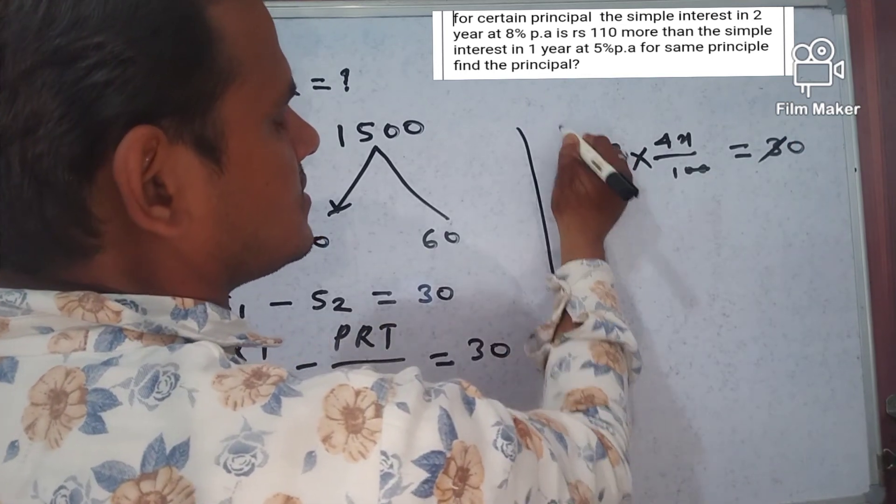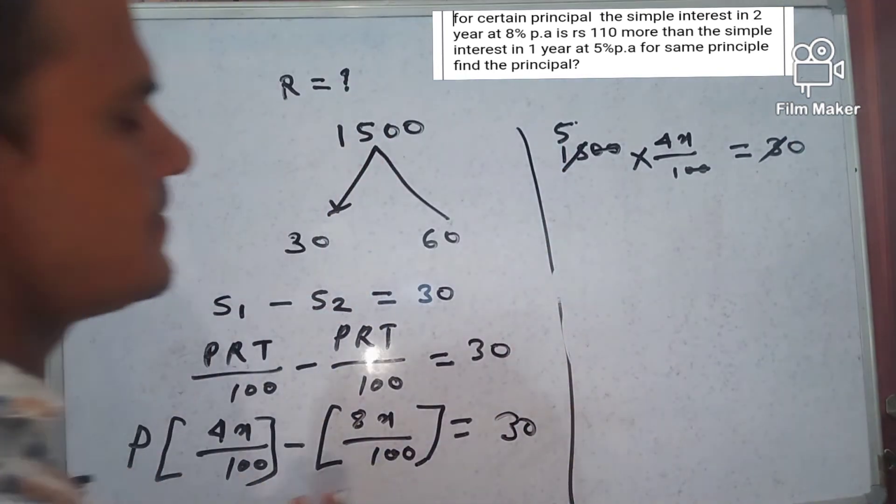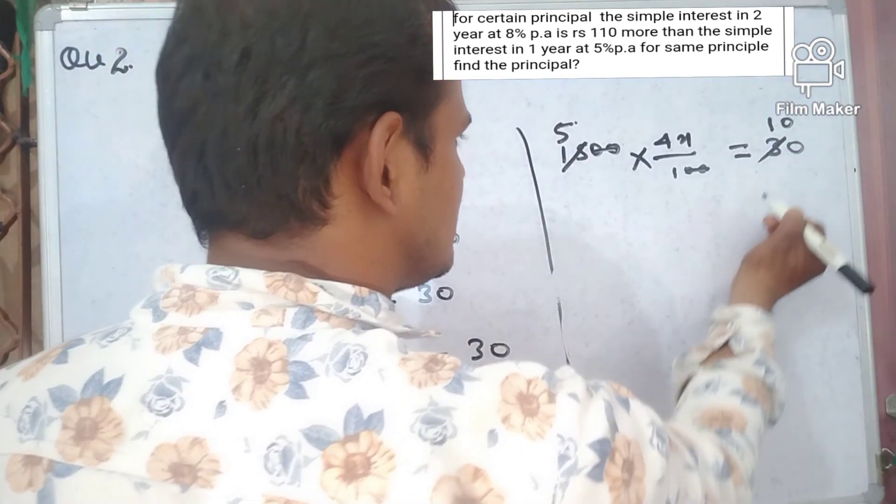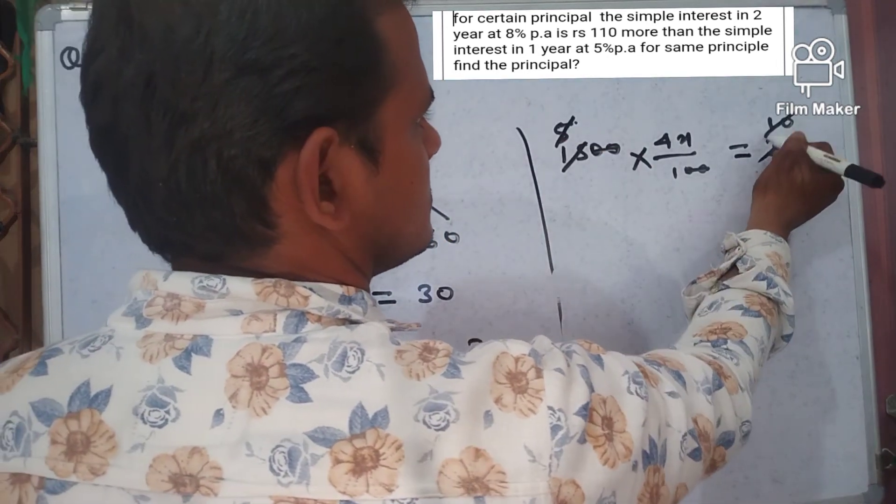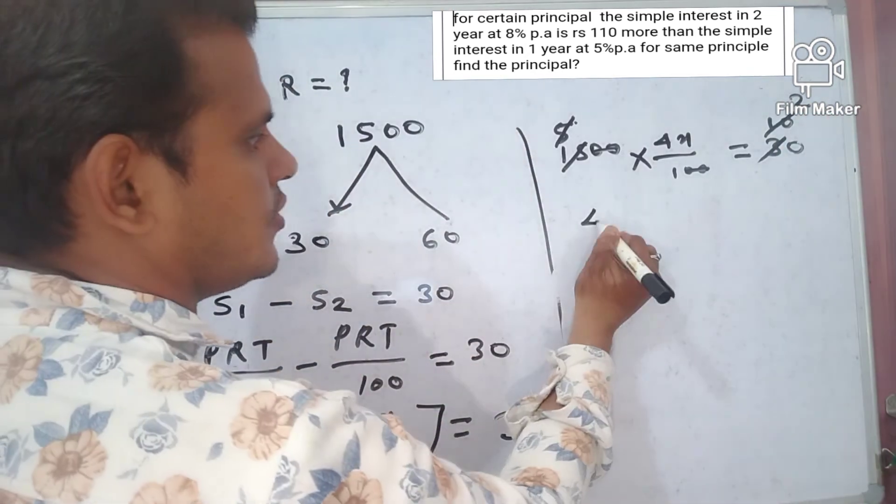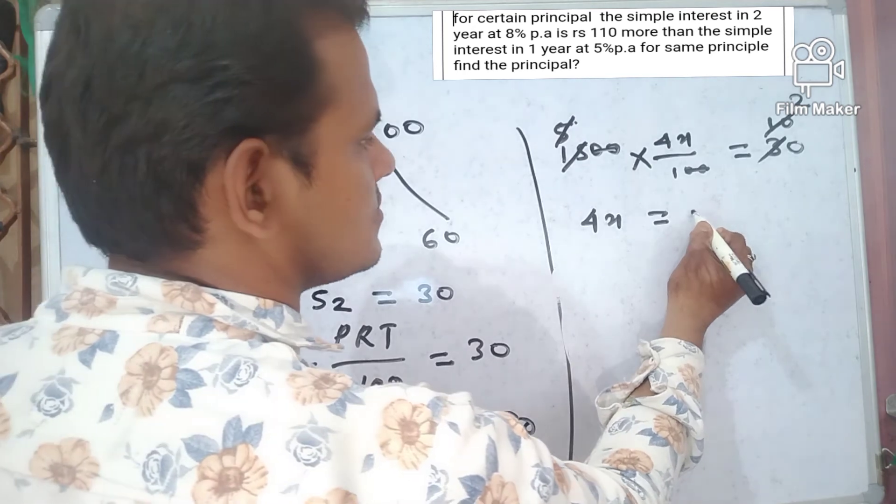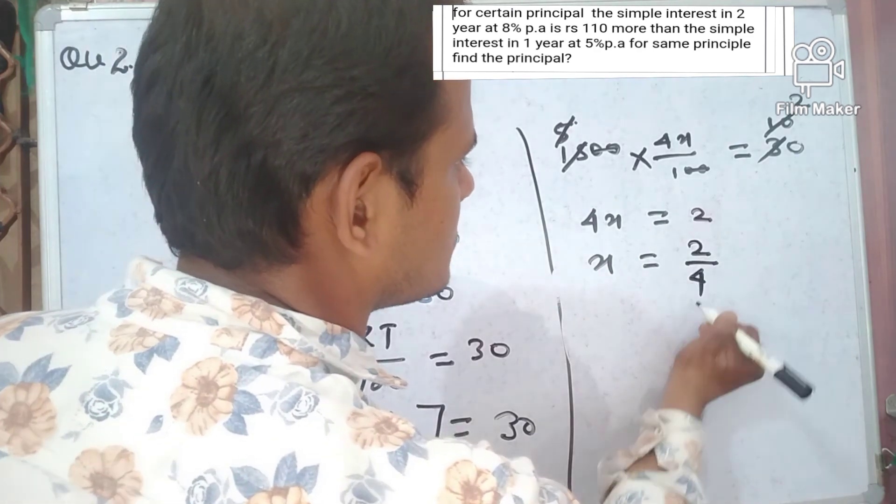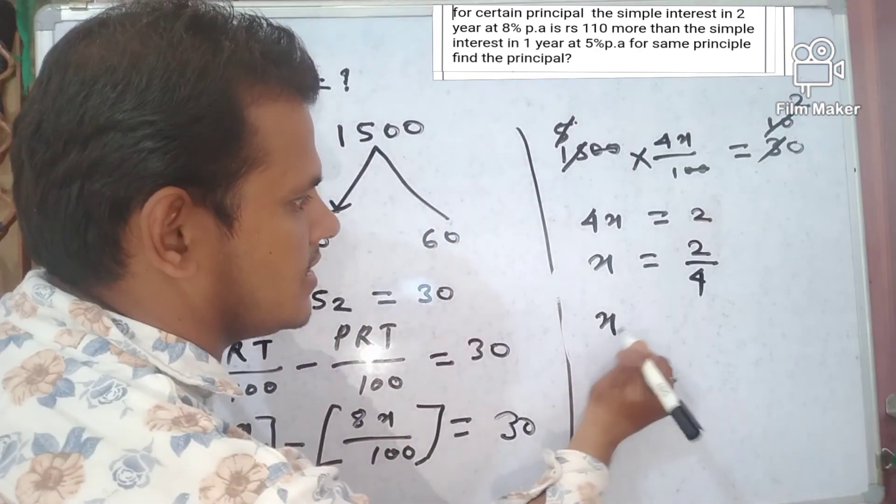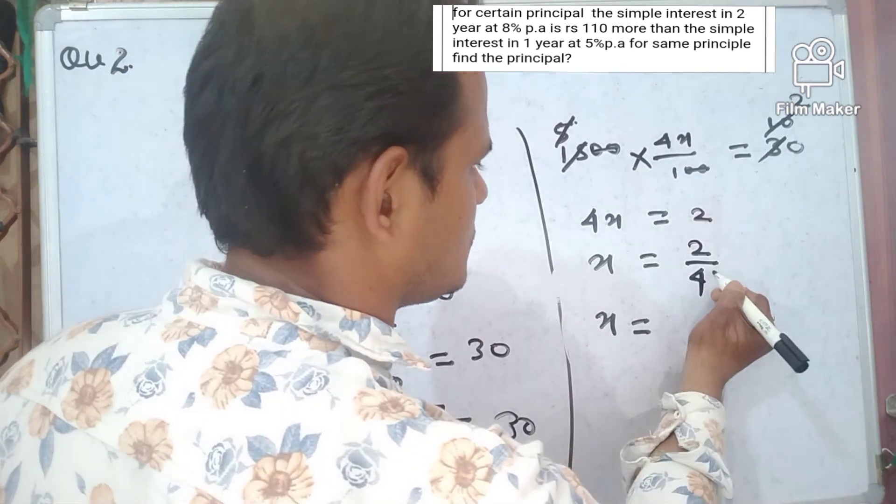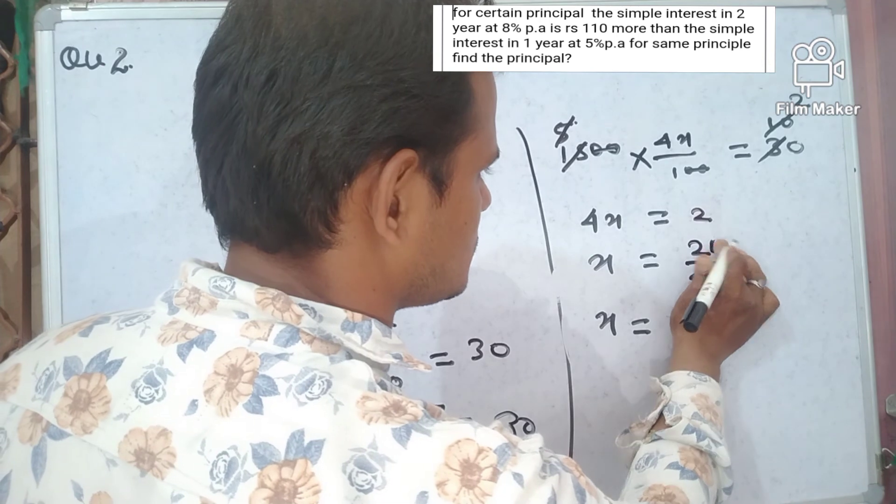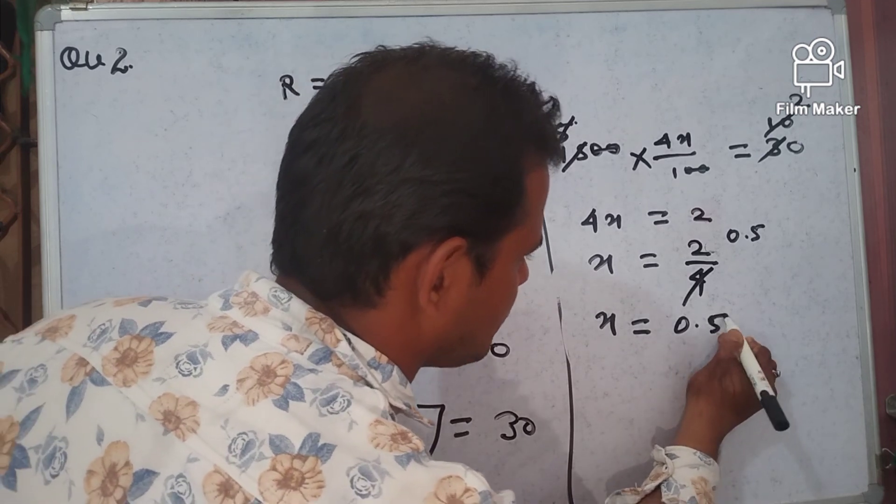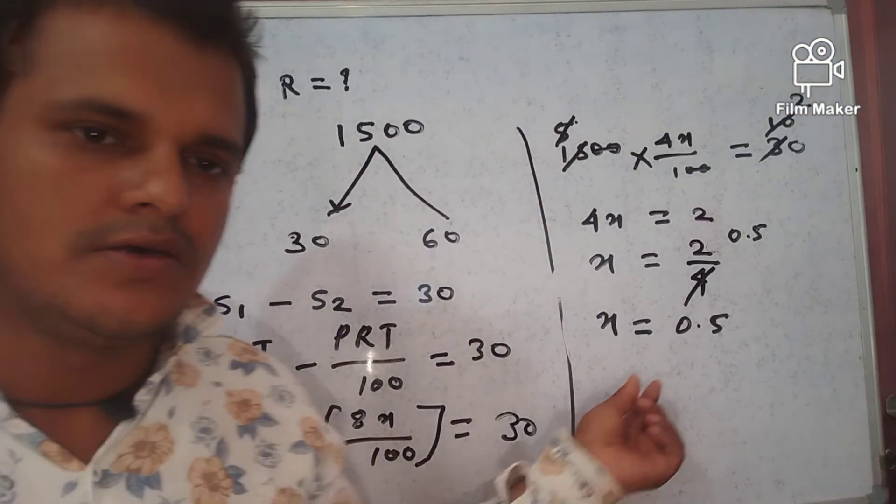0 0 cancel and 3, 5s are 50. And here will be 10, so 5 into 10, so 4x equal to 2 and x equal to 2 by 4 will be 0.5. So x equal to 0.5. So the rate of interest is 0.5 percent.